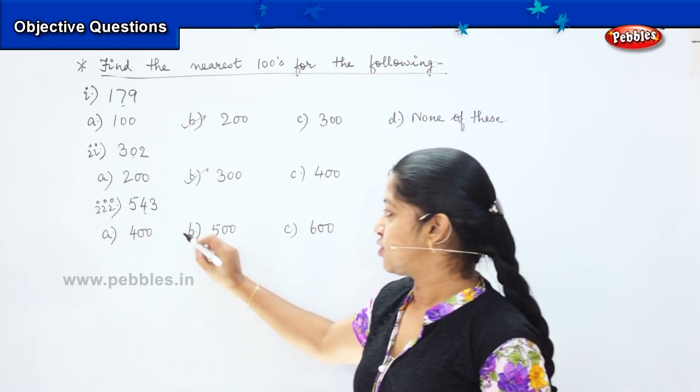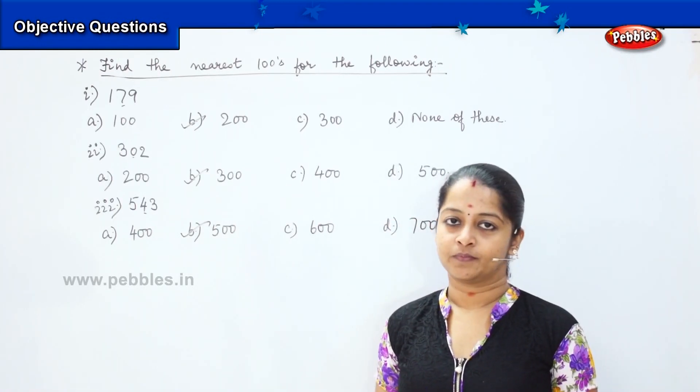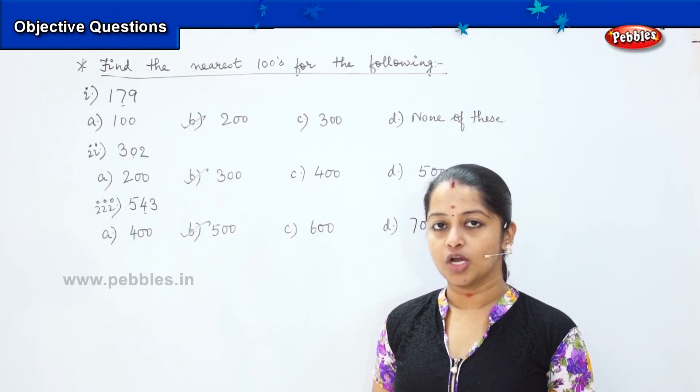Very good. Answer B, 500 is the right option. Are we able to understand children? Shall we do some more?